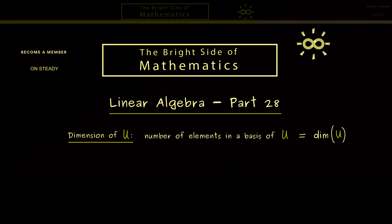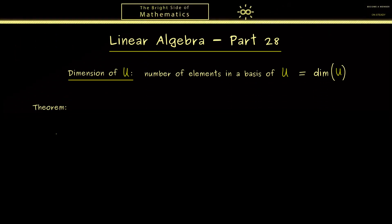Therefore this will be the maximal number the dimension can have for us here. Ok then by knowing this I would say we are already formulating the main theorem of today. And this one will be about the conservation of the dimension under bijective linear maps.